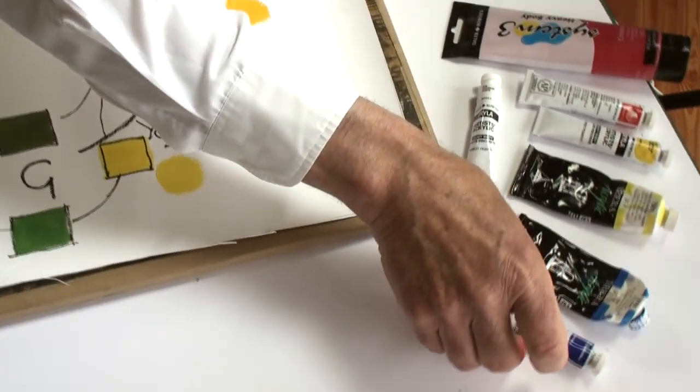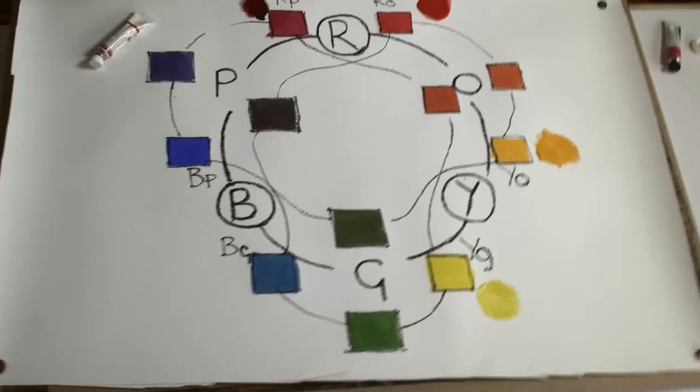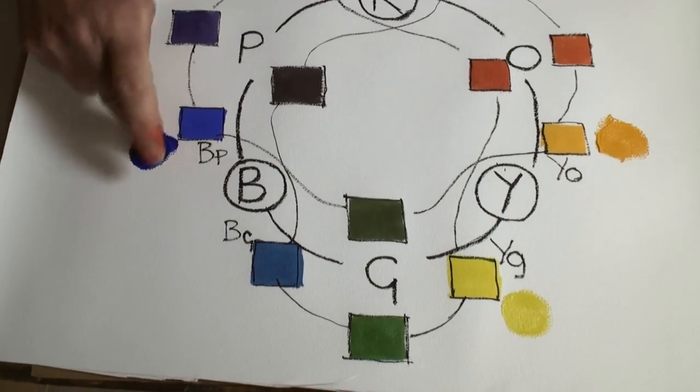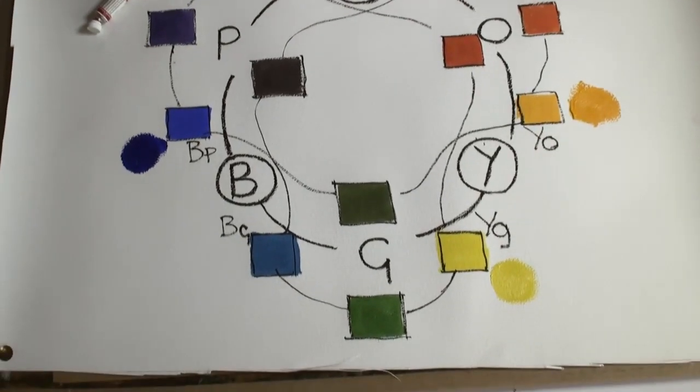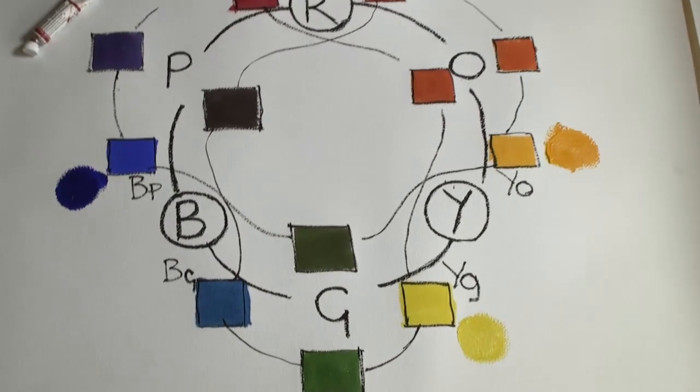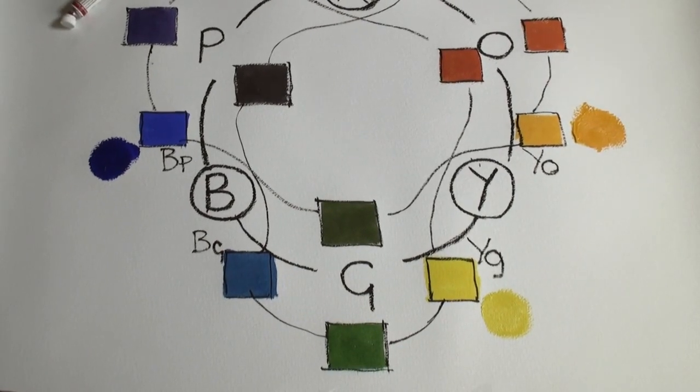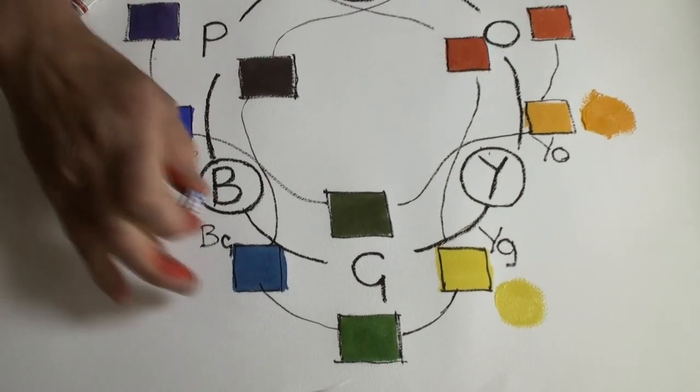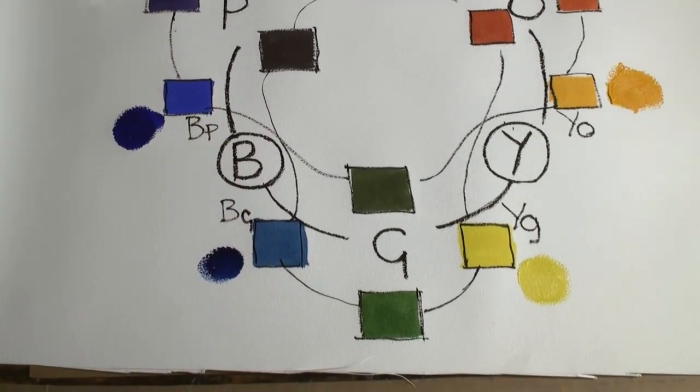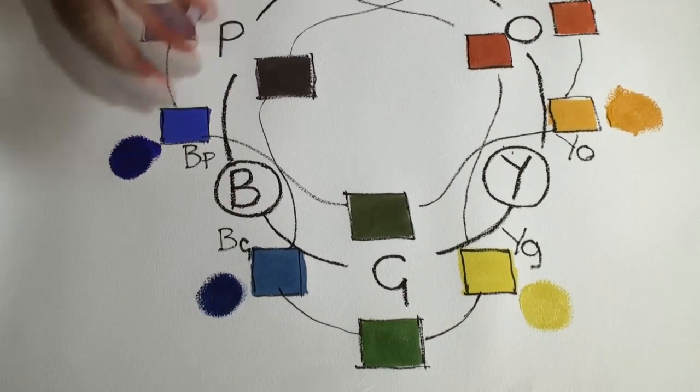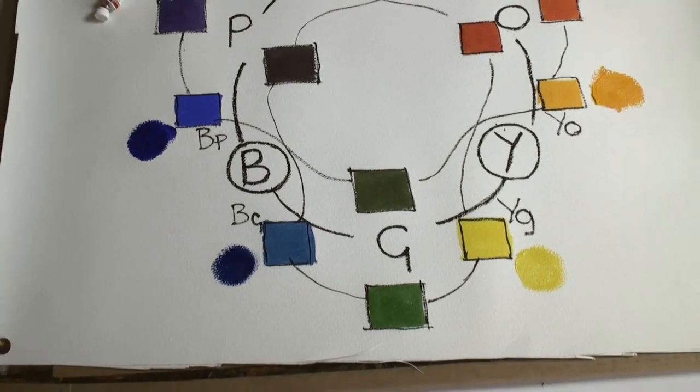So let's now go for the acrylics. Here's our blue-purple. And our blue-green. Now you'll even notice that between these different types of paint, the colour varies slightly to the watercolour.